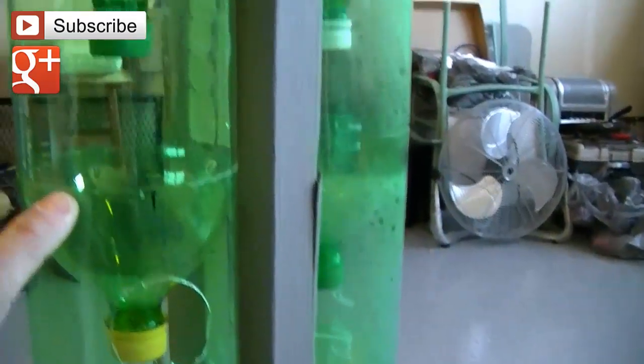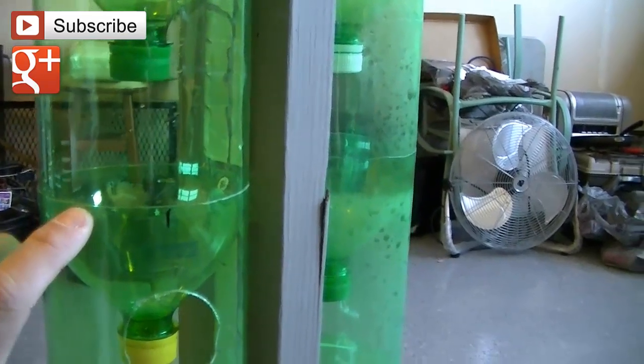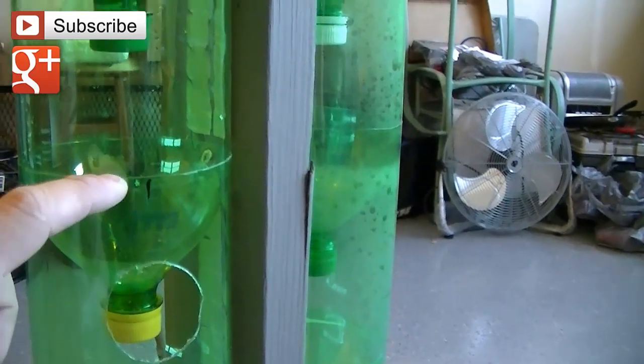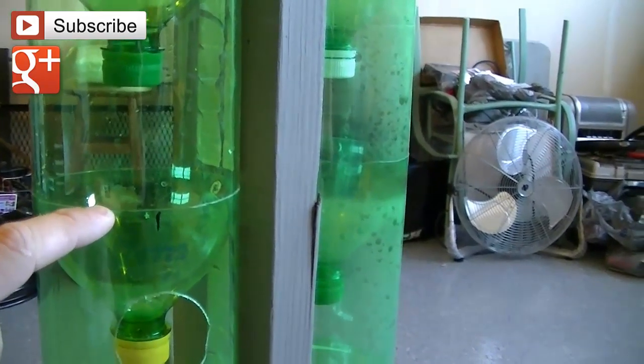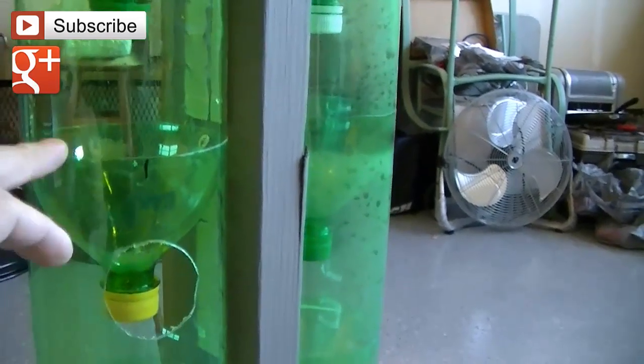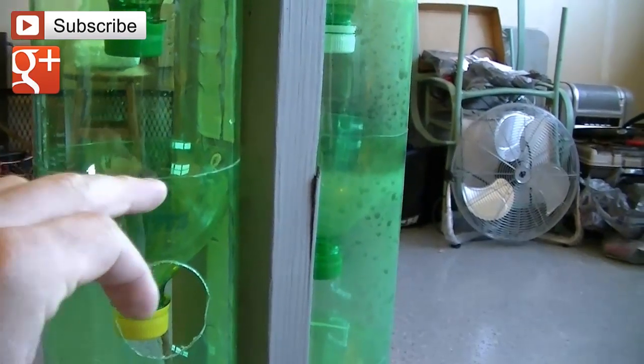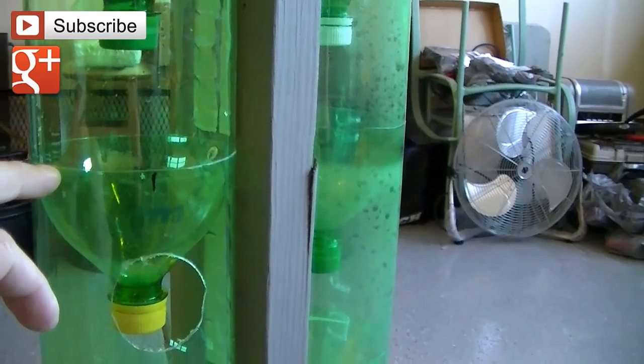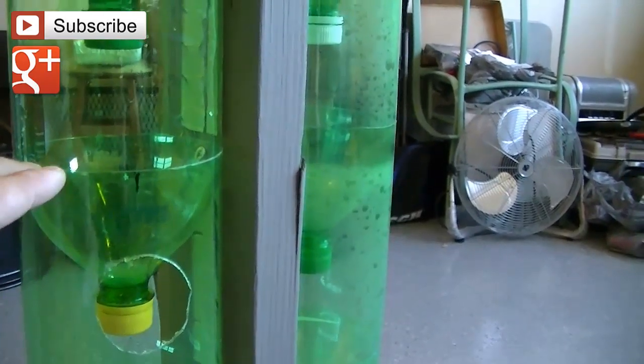And each one of the grow bottles, there's seven of them on each side, each one of the grow bottles have been cut just below, if you were to turn this over, just below where the label would have been for the Mountain Dew bottle, and so on.